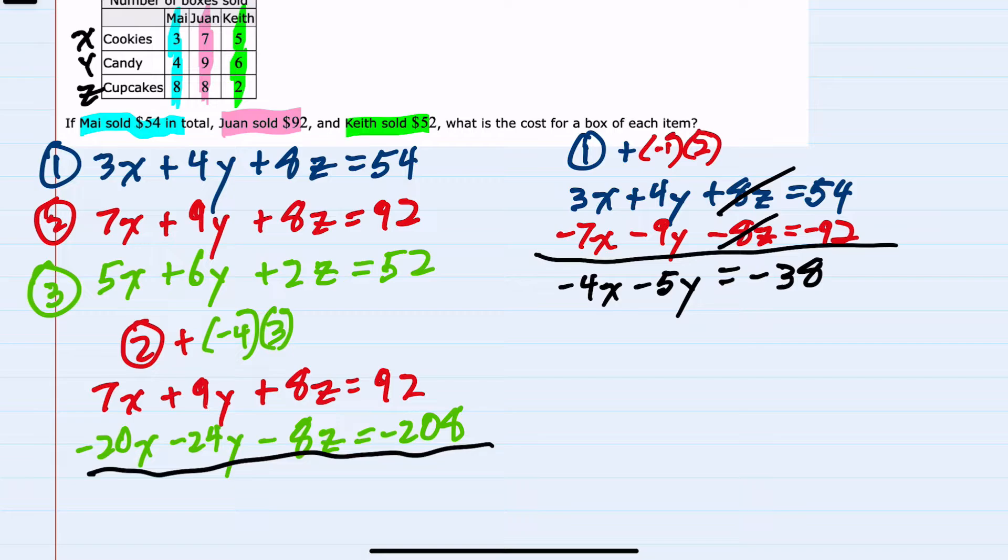And this time, when we add, for X's, I have 7X minus 20X, or a minus 13X. For Y's, a 9Y minus a 24Y would give me a minus 15Y. And just as we wanted, the Z's cancel. Negative 208 and a 92 would be a negative 116. So now we have these new equations, which I'll number four and five. And they are now only X's and Y's. So we have two equations and two variables. We have reduced this from a three by three system of linear equations to a two by two system of linear equations.